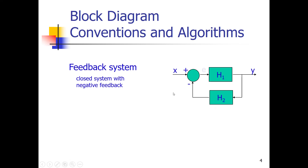At this point we define an error, which is equal to the set point — in my temperature example — and the real measured temperature. Now we try to make a simplification of that complete feedback system, and we do it in two steps. The first mathematical expression is the expression of the error E, which equals X minus H2 times Y. So the signal E represents the set point signal X minus the output signal Y times system H2.